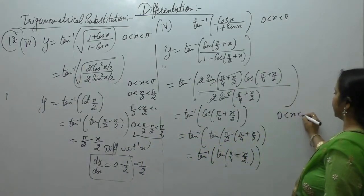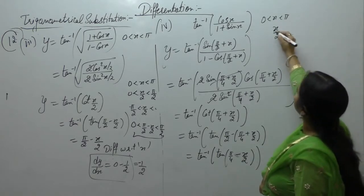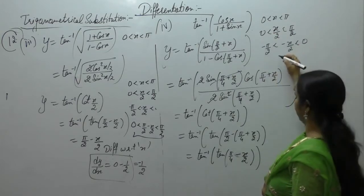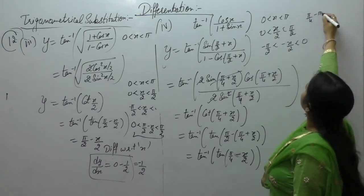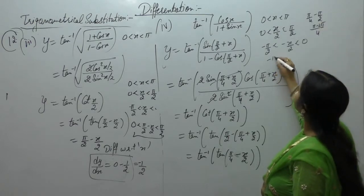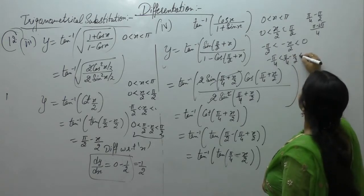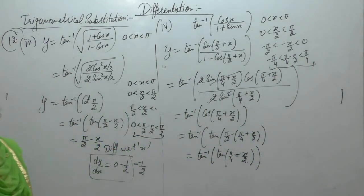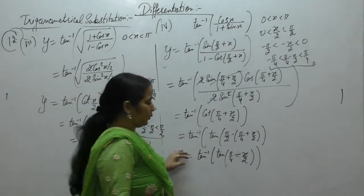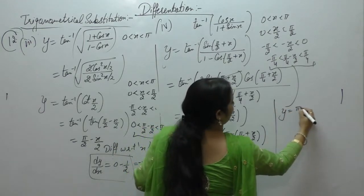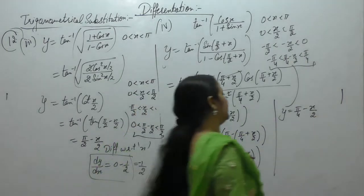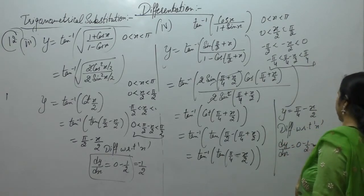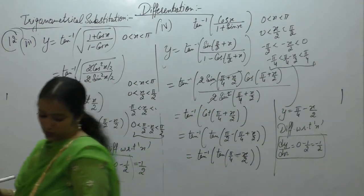The limit is 0 less than x less than π. Dividing by 2 and applying negative sign: minus π/2 less than minus x/2 less than 0. Adding π/4: minus π/4 less than π/4 minus x/2 less than π/4. The limit of tan is between minus π/2 to π/2, so y equals π/4 minus x/2. Differentiating with respect to x, derivative of π/4 is 0, so dy upon dx equals minus 1 by 2.